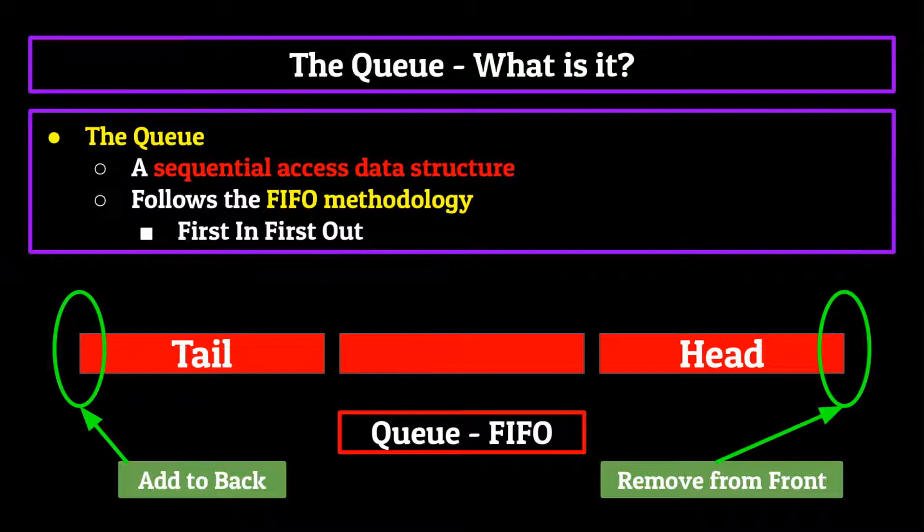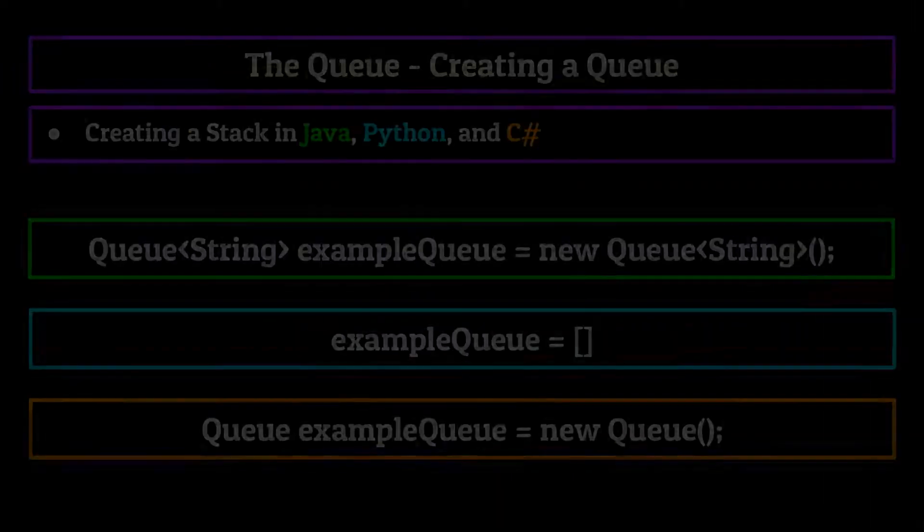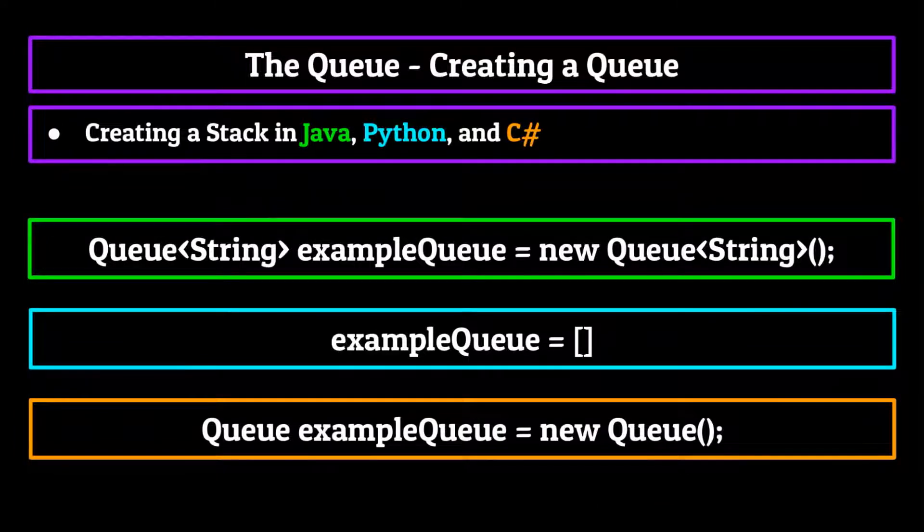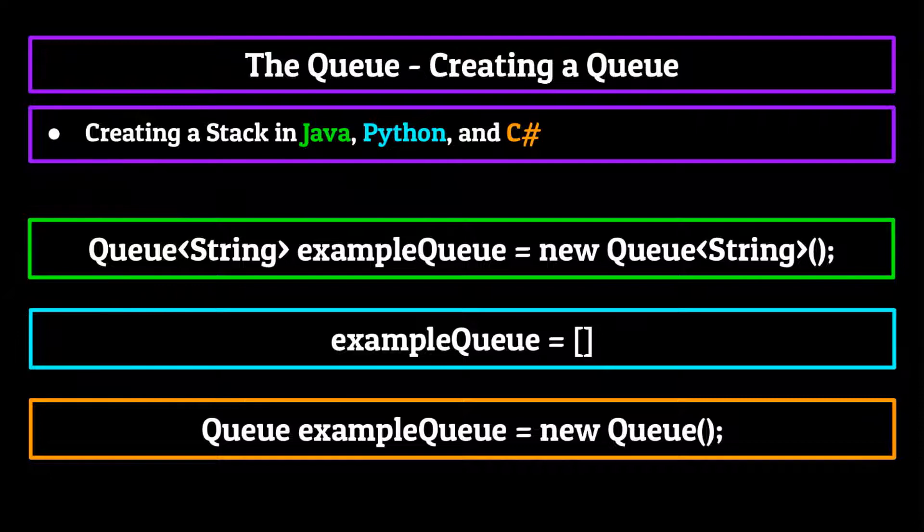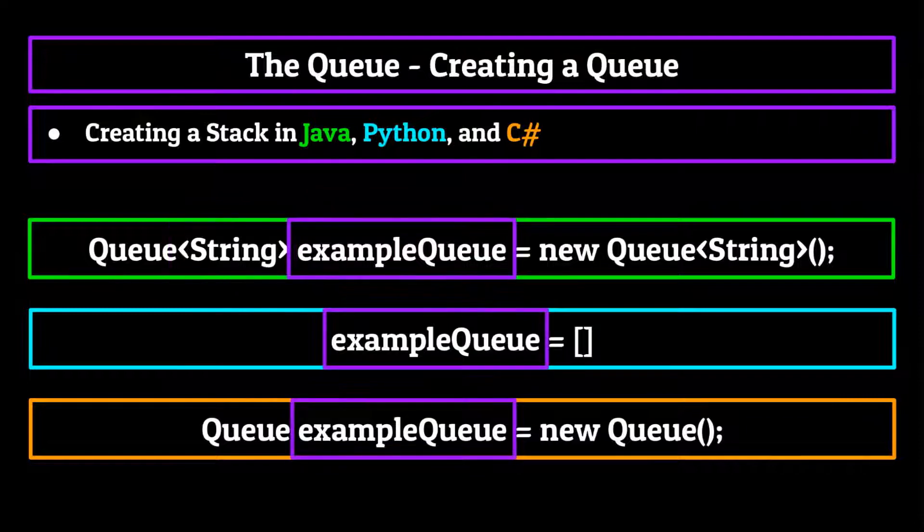Now we're going to dive headfirst into how we actually create a queue, because just knowing about them isn't going to help us use them. So shown on your screen now are three ways to initialize a queue in Java, Python, and C Sharp. You'll notice it looks almost identical to the way we initialized the stack. We start by involving the queue name in Java and C Sharp to let the computer know we want to make a queue. Then, in Java's case, we include the type of queue we're creating, in this case a queue of strings. From there, we just add a name for the queue in all languages. I just called it example queue because that's what it is.